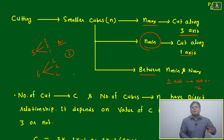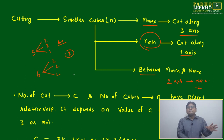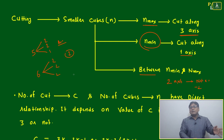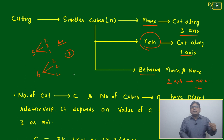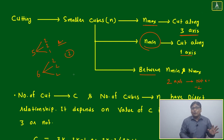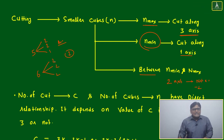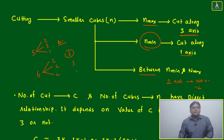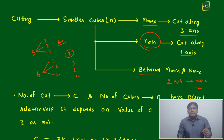Cube problems at any level will never trouble you — it is simple counting. But if your visualization is not correct, you will always make mistakes in counting. You may feel sure you have done it correctly, but it will be wrong. Visualization has a great role in understanding the cube. For 6 cuts, divide equally; for 7 cuts, distribute as 3-2-2 to maximize the number of cubes.